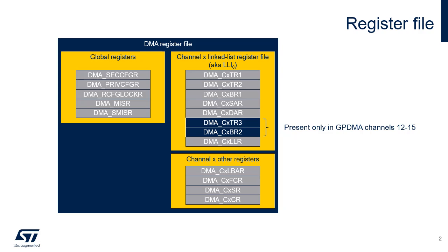Here is a brief description of the channel-linked list register file. TR1, TR2, and TR3 are transfer configuration registers. BR1 and BR2 control the transfer at the block and respectively repeated block level. SAR and DAR are the source and destination address registers. LLR controls the link operation.